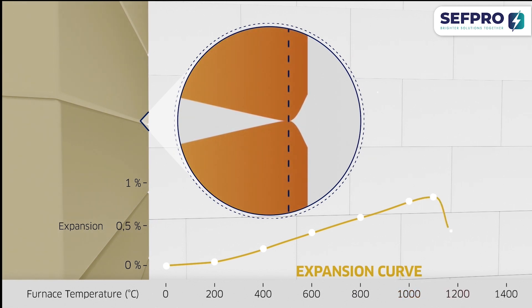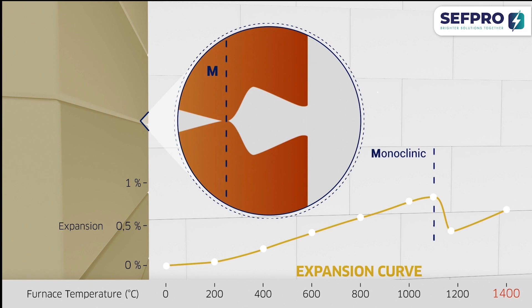The material begins to shrink and the joints begin to open again. Experts speak of the transition from a monoclinic to a quadratic crystal phase.